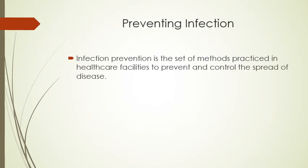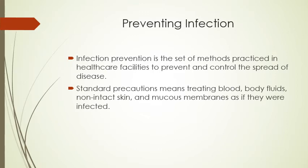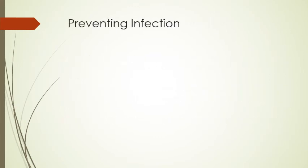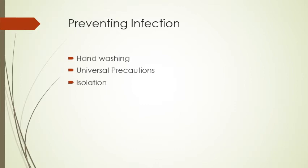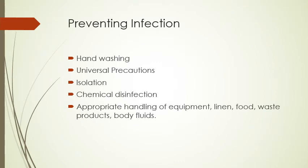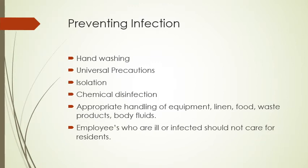Infection prevention is a set of methods practiced in healthcare facilities to prevent and control the spread of infection. These include standard precautions, hand washing, universal precautions, isolation, chemical disinfection — making sure we're cleaning our equipment — and properly handling linen, food, waste products, and bodily fluids. If we are ill or infected, we should not be caring for residents or patients.